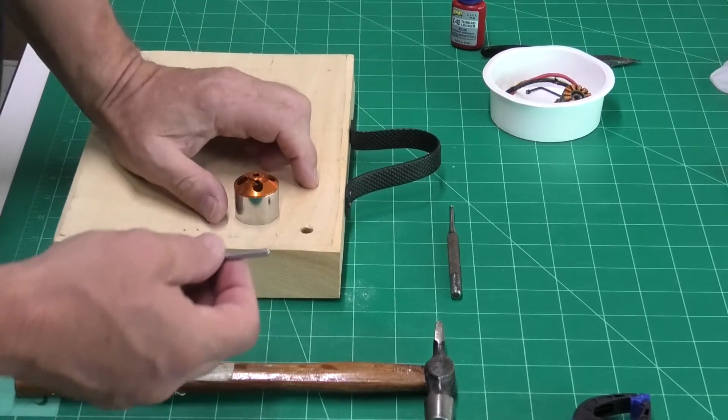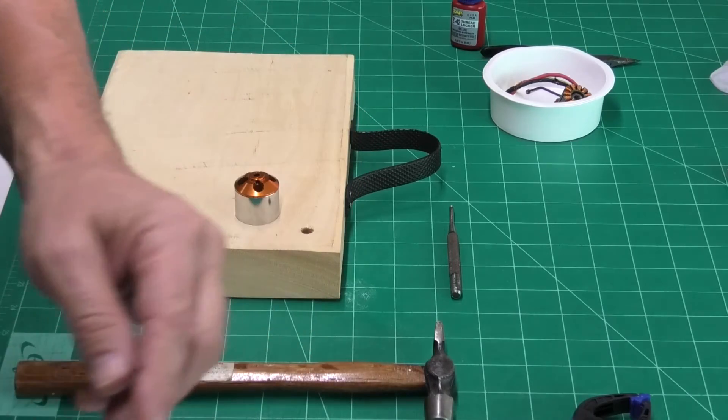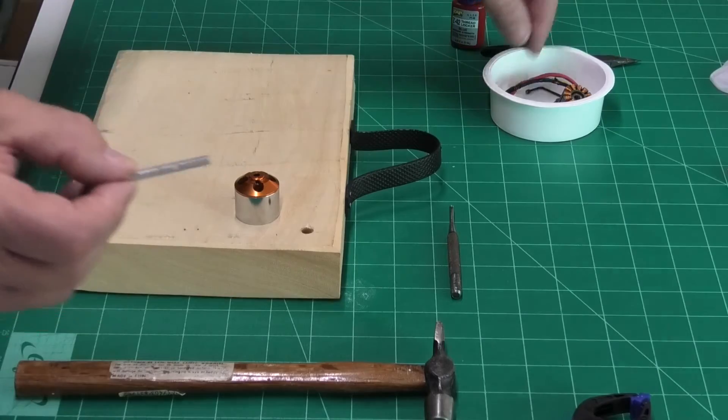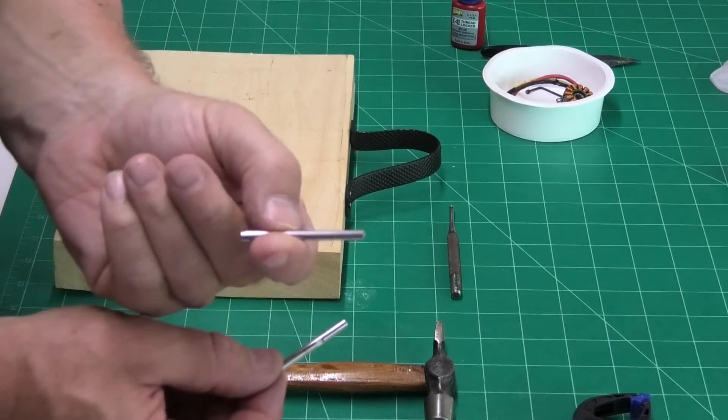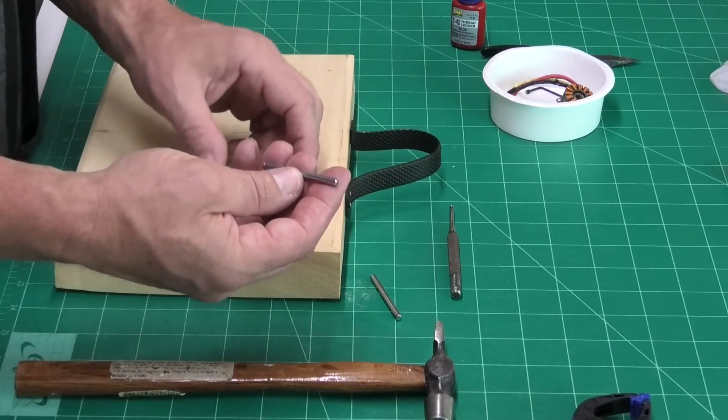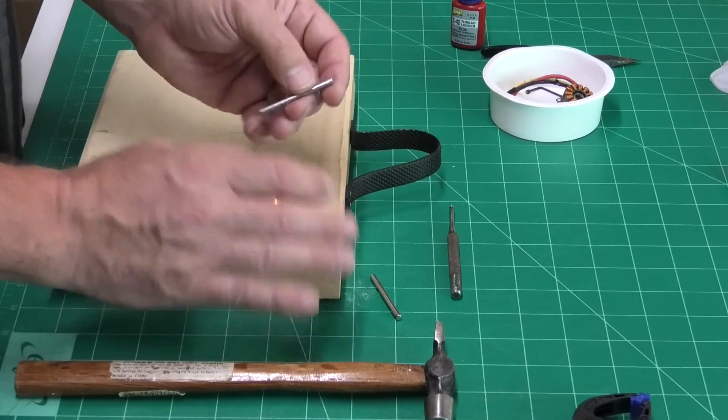Okay, well that came out nice and easy. So, what we're going to do now is put the new shaft back in. This one had a flat where the grub screw went. I've noticed this new one doesn't. It's just a round shaft. So, it doesn't matter which direction we put it in, which orientation. And again, we'll just tap that in.